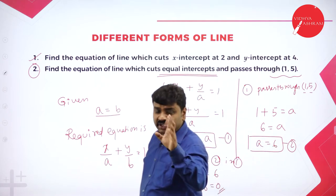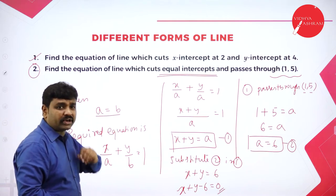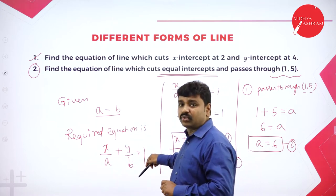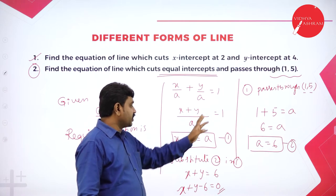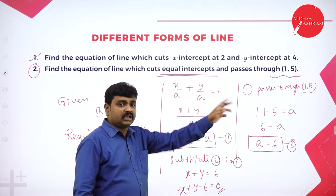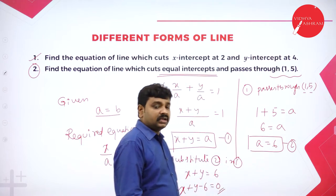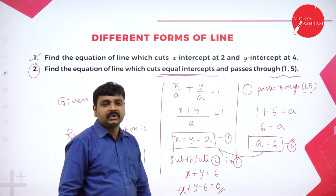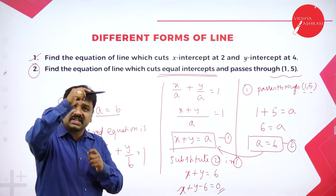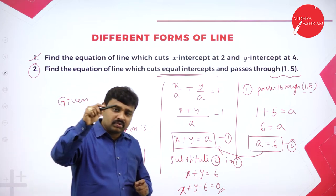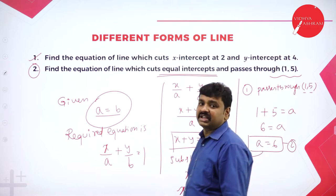To summarize problem 2: equal intercept means x-intercept equals y-intercept, so a equals b. Use the intercept form x by a plus y by b equal to 1; replace b with a to get x plus y equals a. The line passes through a point, so substitute the point to find a. Then substitute the value of a back into the equation to get the final answer. These are the important concepts for intercept form.